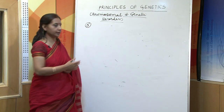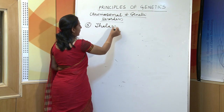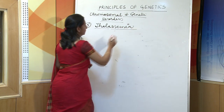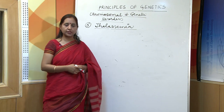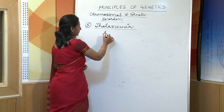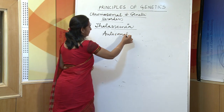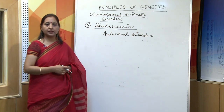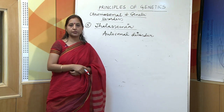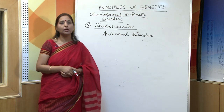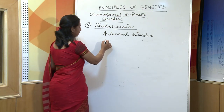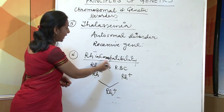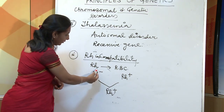The next genetic disorder is thalassemia. This is an autosomal disorder wherein the defective gene is present on the autosome. In thalassemia, defective hemoglobin is found, and therefore the individual suffering from thalassemia has to undergo blood transfusion on and off. It is caused by a recessive gene.